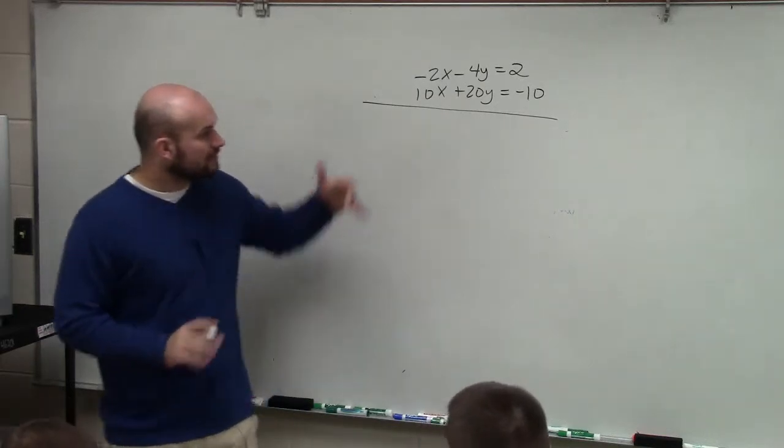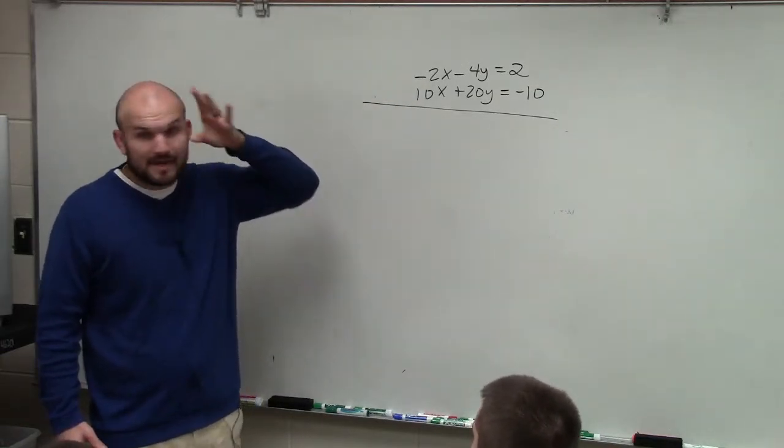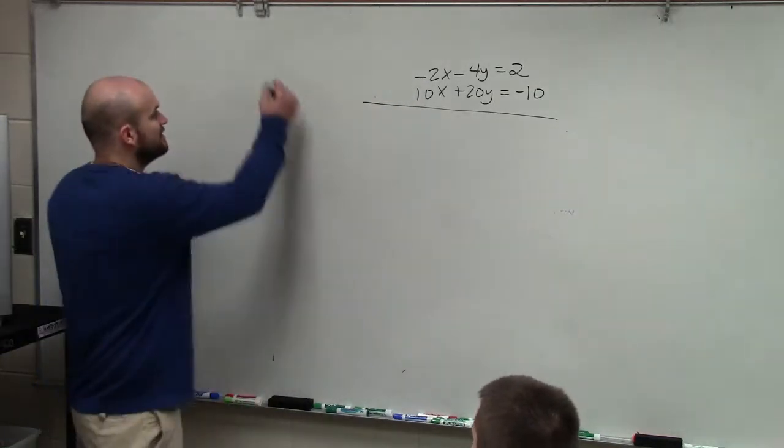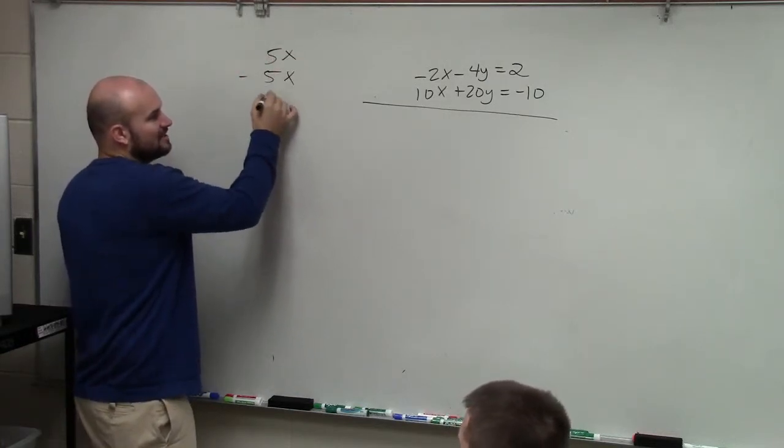Second, we've got to have the coefficients be the same, or we've got to have each variable have the same coefficients. Because think about it this way: 5x - 5x is 0x.